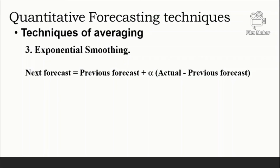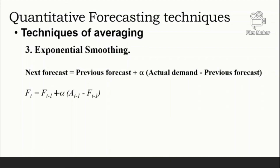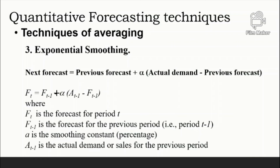More concisely: Ft equals F(t-1) plus alpha multiplied by (A(t-1) minus F(t-1)), where Ft is the forecast for period t, F(t-1) is the forecast for the previous period, alpha is the smoothing constant, and A(t-1) is the actual demand or sales for the previous period. The smoothing constant alpha represents a percentage of the forecast error.